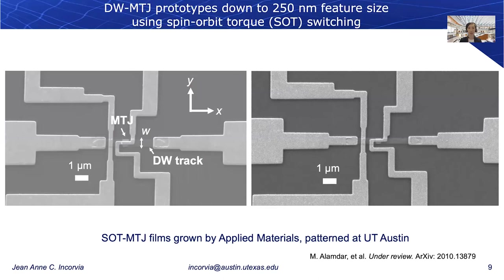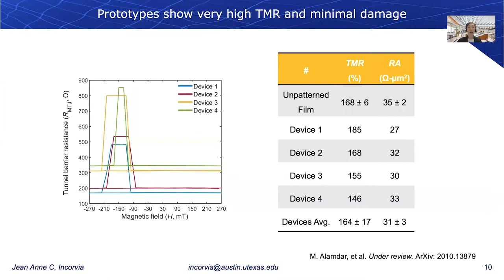We have built these prototypes down to 250 nanometer feature sizes. This is a top-down SEM image where you can see the domain wall track of width W and the magnetic tunnel junction in the center. We have this additional electrode on the left, which we call an ERSTEV field line, which will allow us to control the variability in these devices. These films were grown by Applied Materials and then patterned at UT Austin.